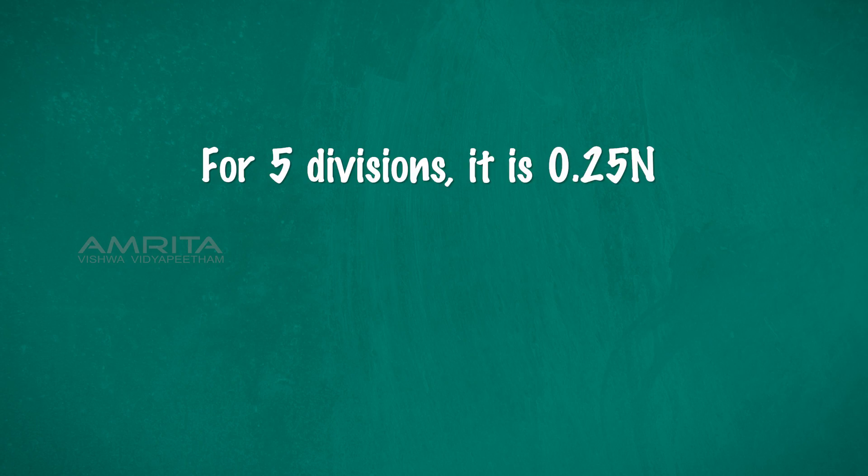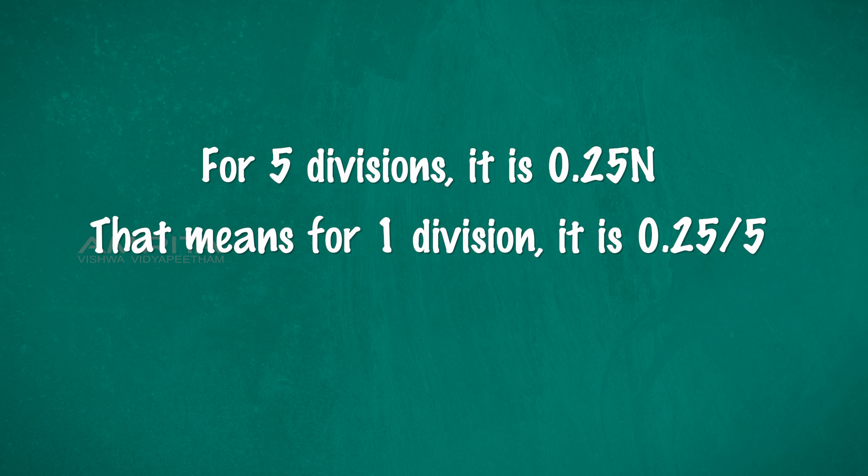For five divisions, it is 0.25 N. That means for one division, it is 0.25 divided by 5, which is 0.05 N.